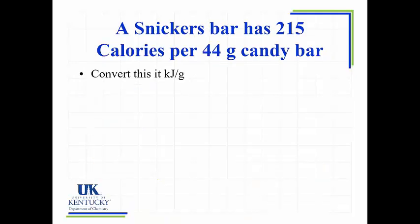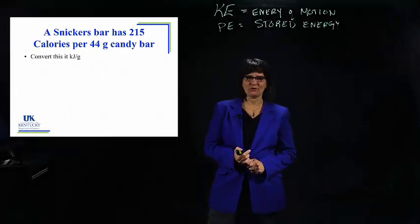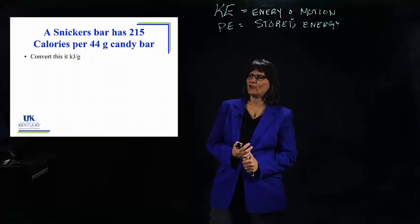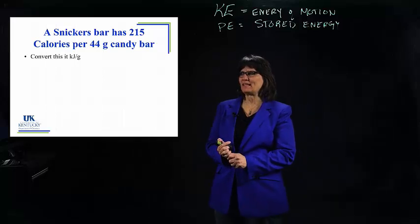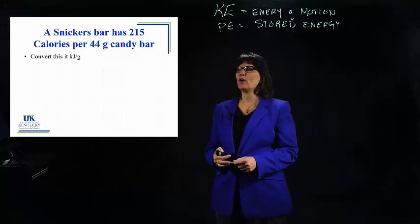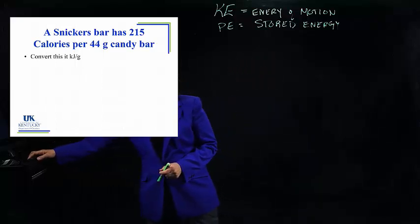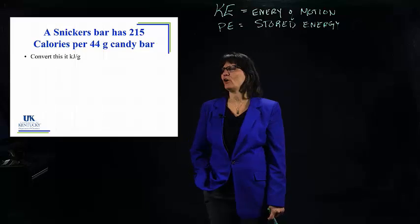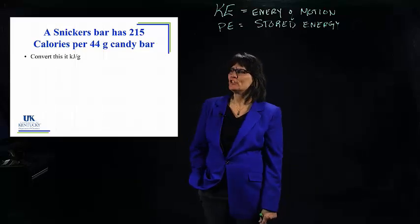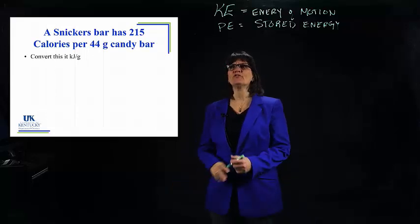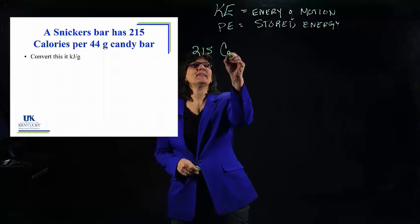I thought it'd be fun to take—I love Snickers candy bars—so let us figure out how many kilojoules of energy are in every gram of a Snickers bar. So this is what I know: if you take a Snickers bar and you look at the calorie count on the back of that Snickers bar, it says it's 215 calories, and I know that the candy bar is 44 grams because that's also written on the candy bar. So I want to know per each gram what we have there.